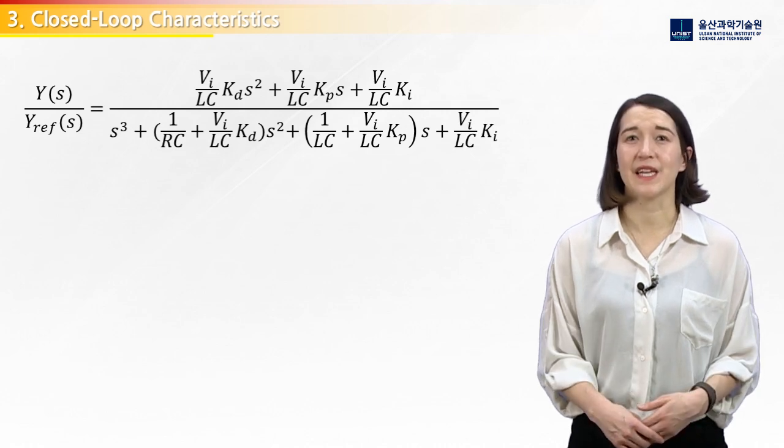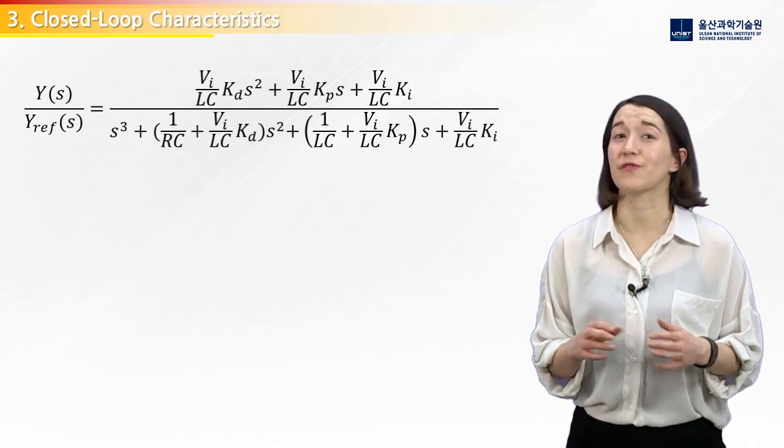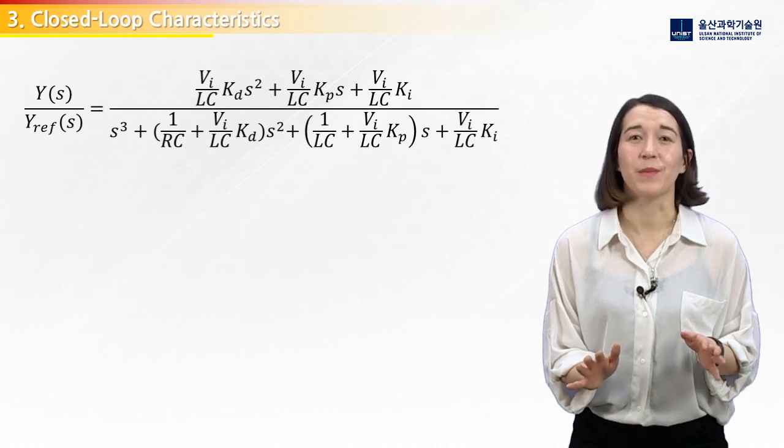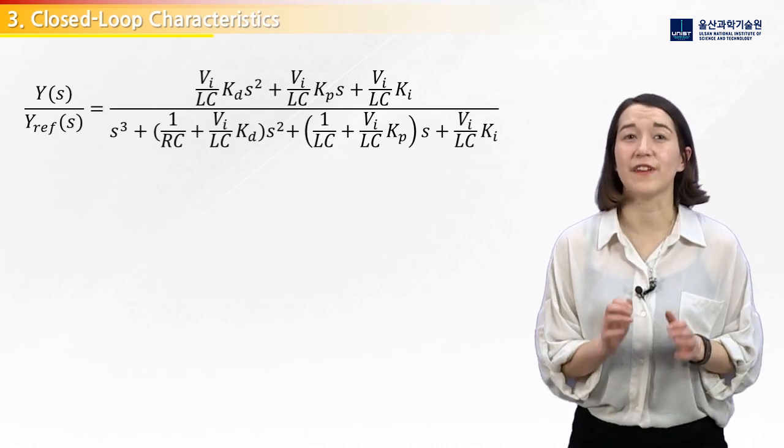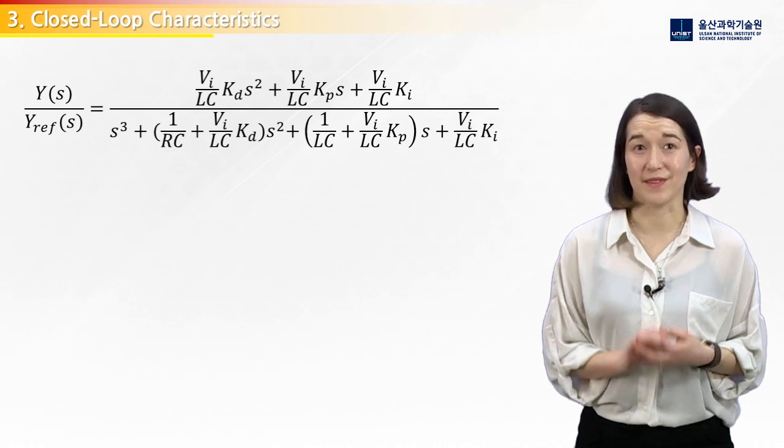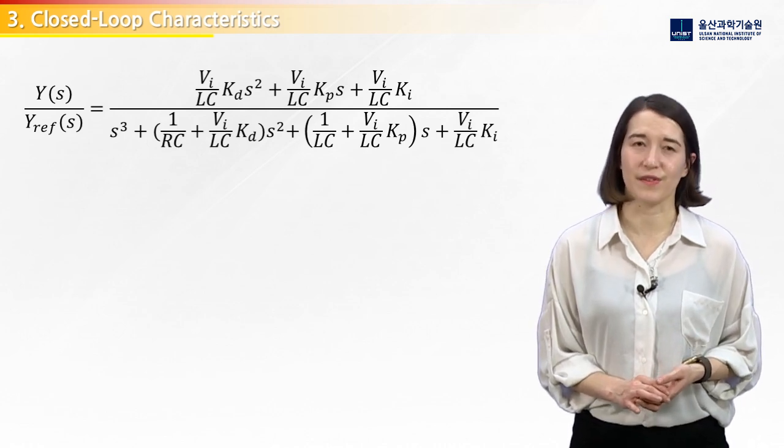Here is the PID controlled buck converter transfer function. There are lots of terms here, but remember that R, L, C, and Vi are inherent properties to our system. So they cannot be changed in the controller design.